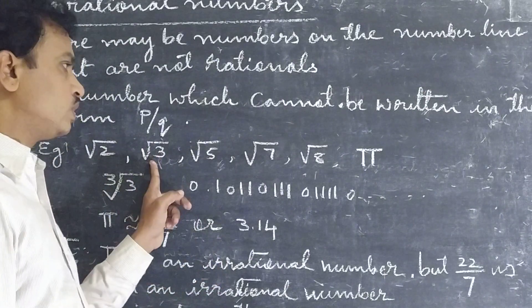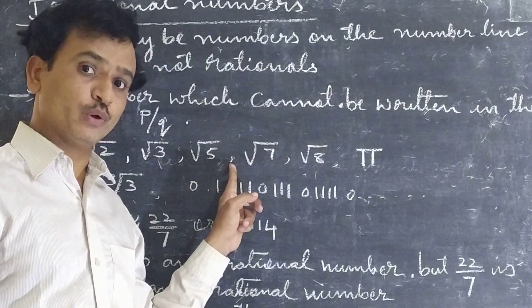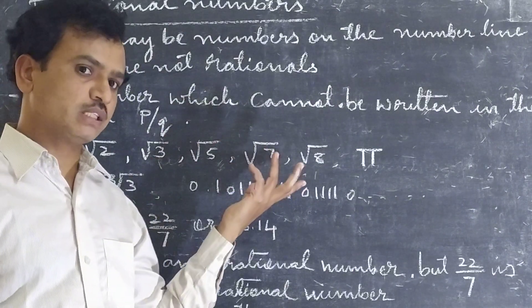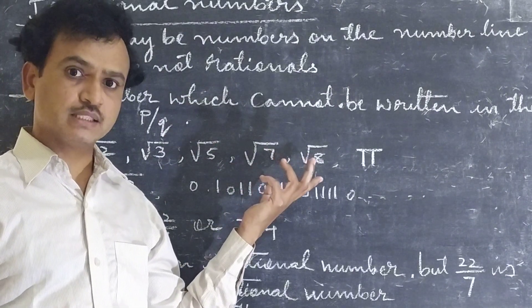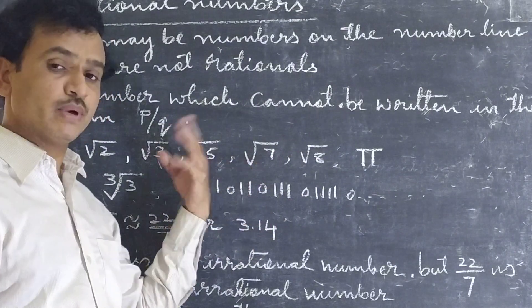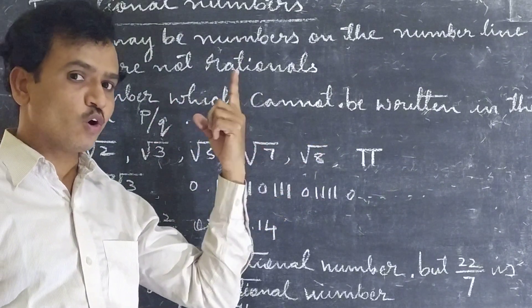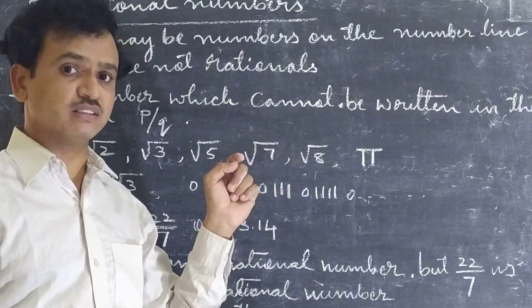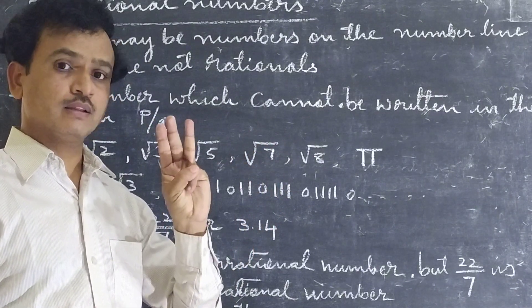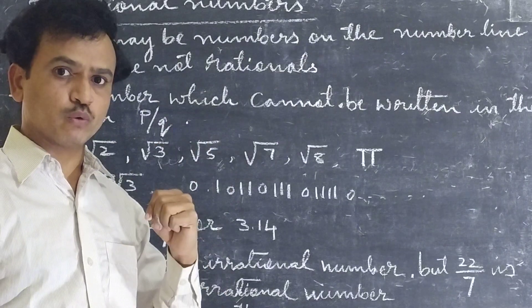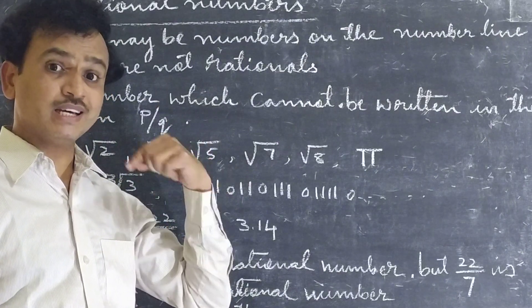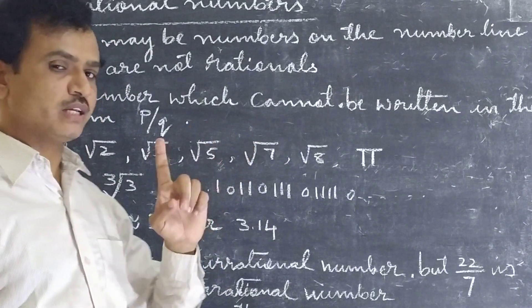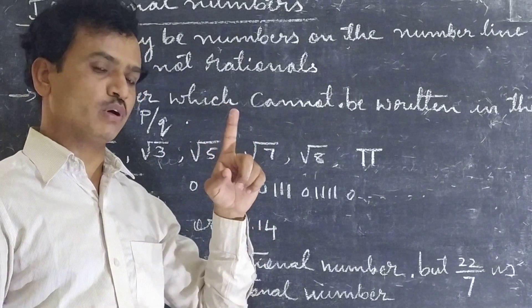So after root 3, the next irrational number is root 5. Root 6 is also an irrational number. Root 7 and root 8 are irrational, but not root 9. Square root of 9 equals 3, and 3 can be written in the form P by Q as 3 by 1. So root 9 is a rational number, not an irrational number.